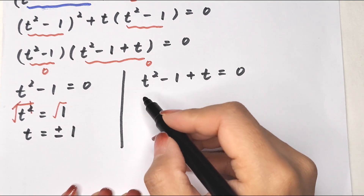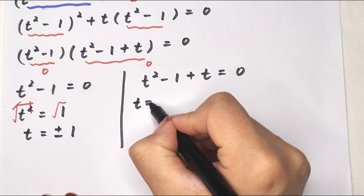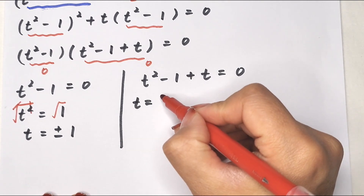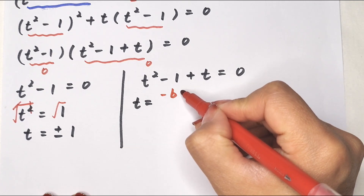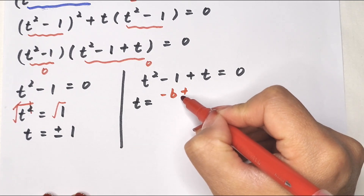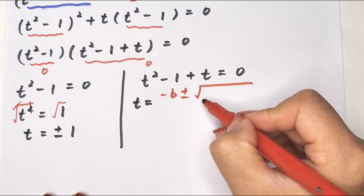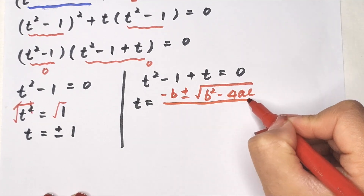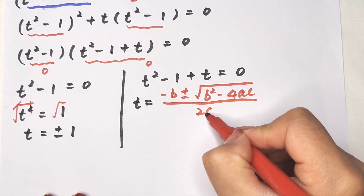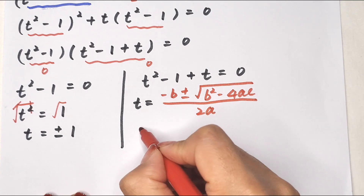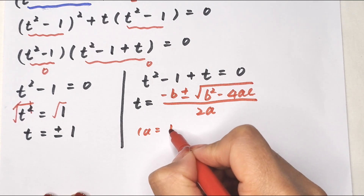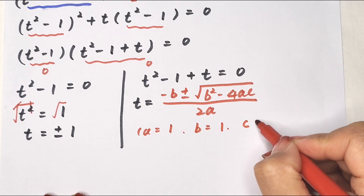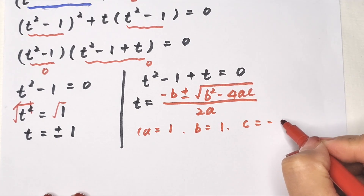For the second case, we apply the quadratic formula: t equals negative b plus or minus square root of b squared minus 4ac, all over 2a. In this equation, a is 1, b is 1, and c is negative 1.